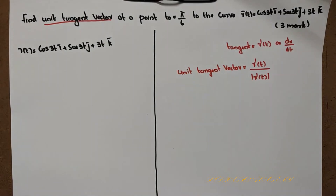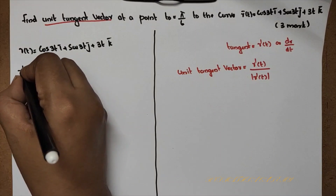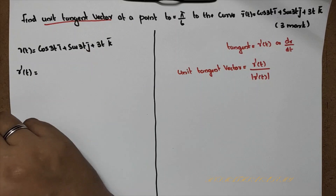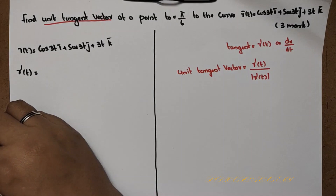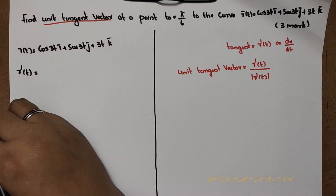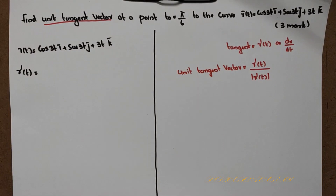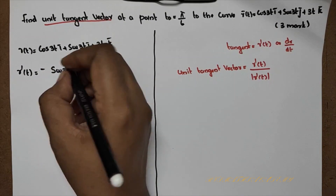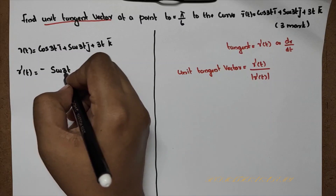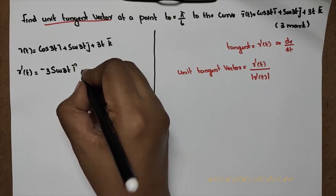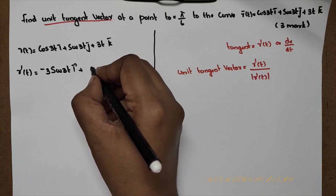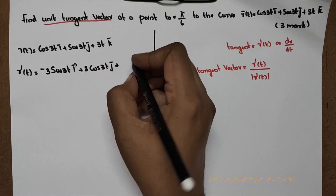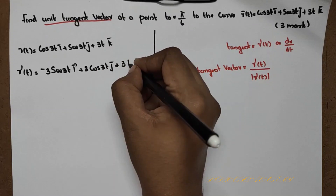What is r'? If we find r', differentiating r(t): the derivative of cos3t is -sin3t multiplied by 3, giving -3sin3t·i, plus the derivative of sin3t is cos3t multiplied by 3, giving 3cos3t·j, plus the derivative of 3t is 3, giving 3k.